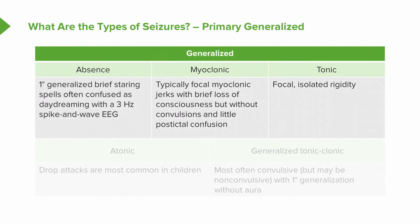Tonic seizures involve focal isolated rigidity, typically lasting seconds to minutes, characterized by tonic activity — isolated rigidity of either one part of the body or the entire body. Atonic seizures are drop attacks, where patients lose postural tone. These are common in children, very difficult to control, and can result in severe injury. Patients will very suddenly lose all postural tone and fall to the ground, and many of these children wear a helmet or other protective device because these seizures cannot be predicted and can result in severe injury.